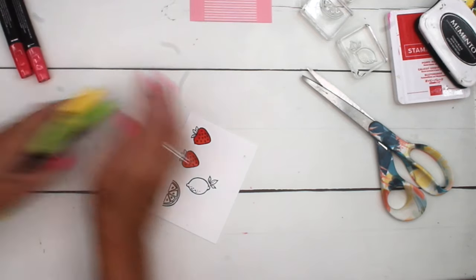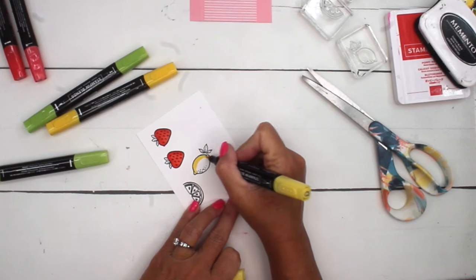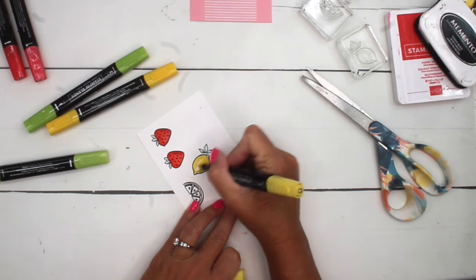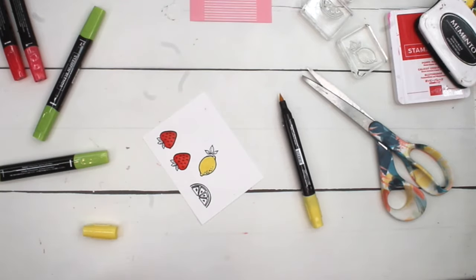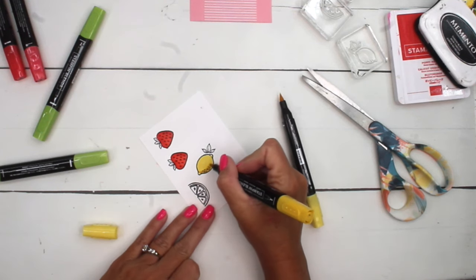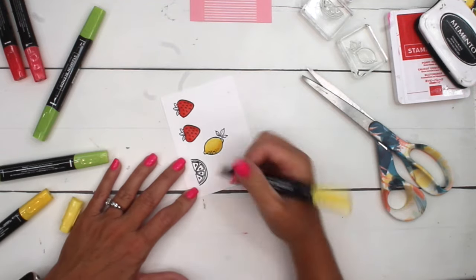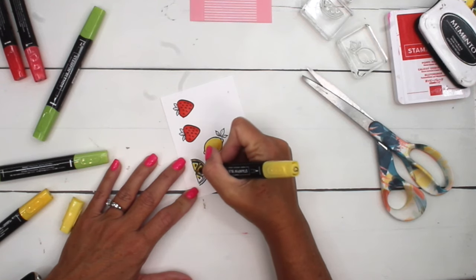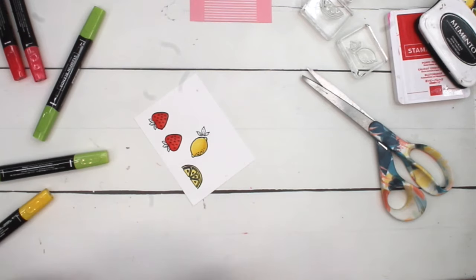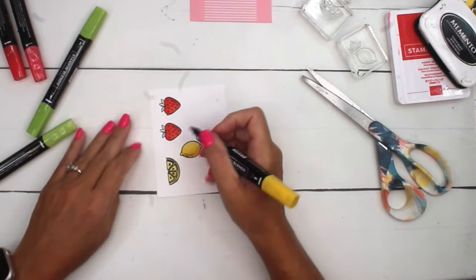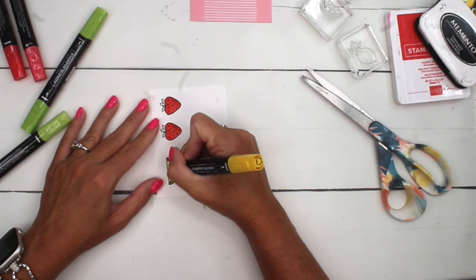And then we're going to take our light Daffodil Delight. And I'm going to give this lemon a full coating of light. I'm going to leave it open because I'm going to use it again. I'm going to take my dark and I'm going to use the brush tip here. And I'm just going to kind of add some shadow around the bottom. And then I'm going to take my light and just flick that ink up so it blends.